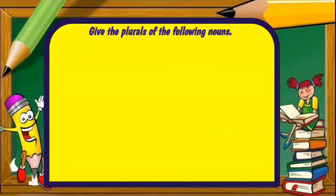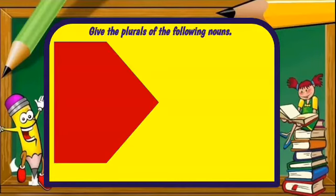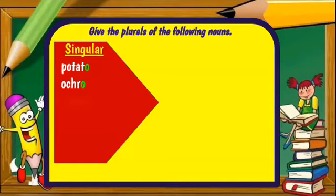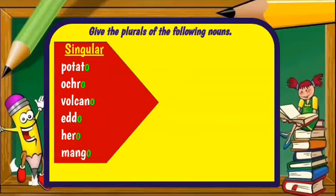Now let's give the plurals of the following nouns. Singular: one potato, okra, volcano, edo, hero, and mango. So here we have our singular nouns: potato, okra, volcano, edo, hero, and mango.